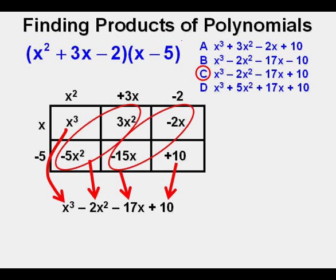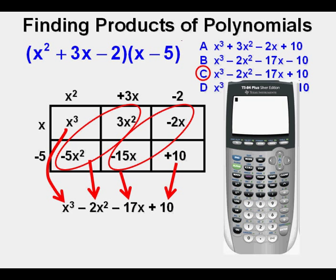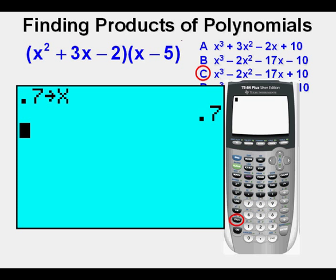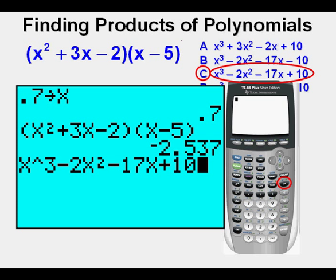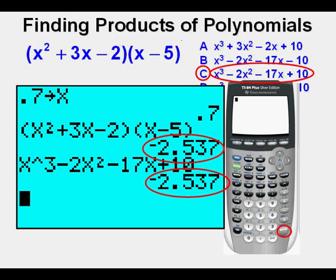I want to do one more thing with this problem that is to verify that our solution is correct. If we have a graphing calculator it's easy to do. What we'll do is store a value for x. I'm going to press 0.7 then storage that's the STO key above the on key here shown in the calculator then press enter. Then we enter the original expression as shown in the problem then press enter. Next we enter the answer we want to check answer c. We enter x to the third by pressing the rooftop or caret key right under the clear key. Press enter. We see that the values of the expressions are the same negative 2.537 demonstrating that c is the correct answer. Check.